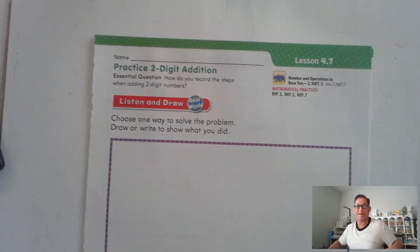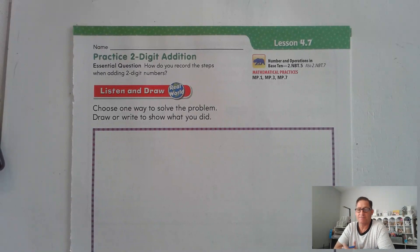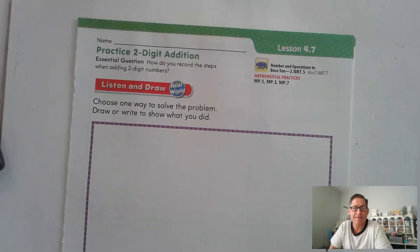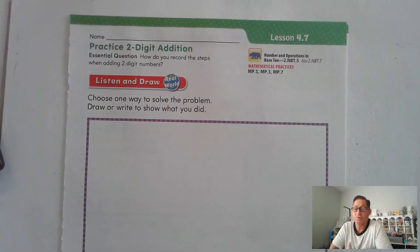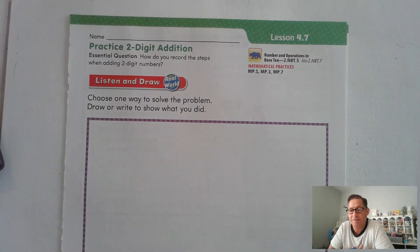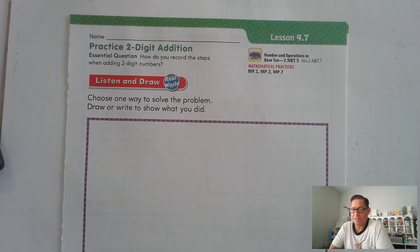Hello, everybody. In today's lesson, lesson 4.7, we're going to practice what we've been working on in the last couple of lessons, two-digit edition. We're on page 197 of the second grade GoMath textbook. And basically, how do you record the steps when adding two-digit numbers?